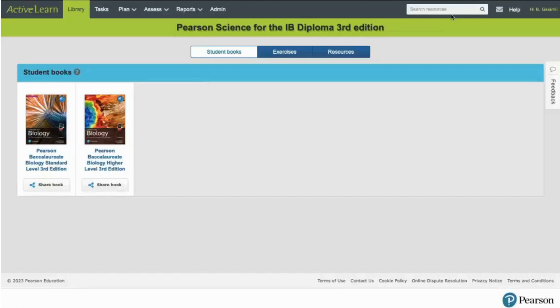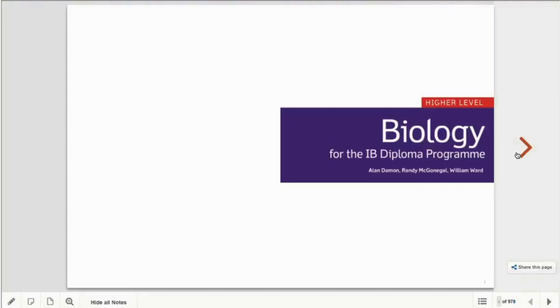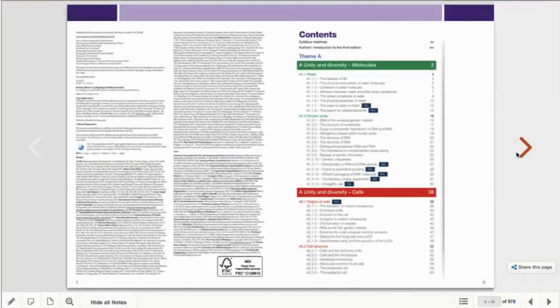The third and last book is the Pearson book. It has separate standard level and higher level books. This is good news for students because these books offer flexibility and ensure that every student covers the right content. This is the biology standard and biology higher levels. We're going to look at the higher level.